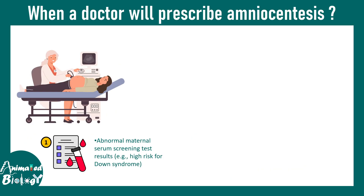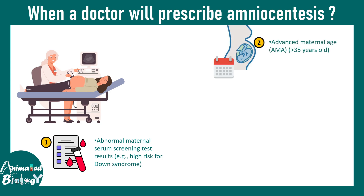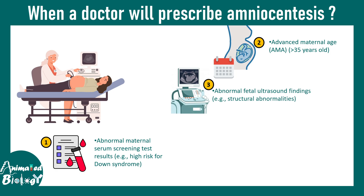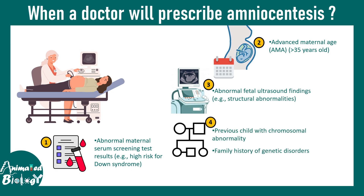When does a doctor prescribe amniocentesis? There are pre-criteria, as it's not a very easy or low-cost technique. The prerequisites include an abnormal maternal serum profile for certain screening biomarkers — for example, biomarkers for Down syndrome — or when that condition is present and the mother's age is more than 35 years. An abnormal fetal ultrasound can also be a key driver. Additionally, if a parent has a previous child with a chromosomal abnormality, amniocentesis is recommended.